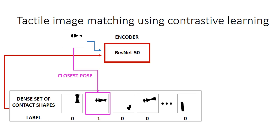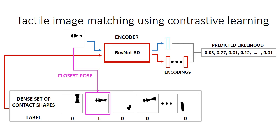We encode them using a ResNet50, and from that we compute encodings of each of the contact shapes. Then we compute the distance between them, and with a softmax we get the predicted likelihood of each of those elements in the grid being the closest one to the random pose that we generated.